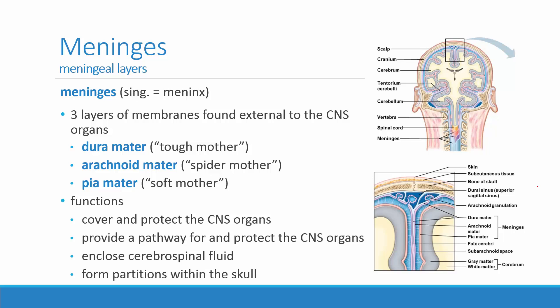Deep to the dura mater is the arachnoid mater — 'arachnoid' because of spider — and this is a real webby, gauzy layer, so there's not a lot of substance here. We weren't able to see it in the preserved specimens in lab. Then last of all, the layer that actually adheres to the brain and spinal cord — you can't really pull it away at all — is the pia mater. 'Pia' like piano in music means soft, so the pia mater is the softest of the three meningeal layers.